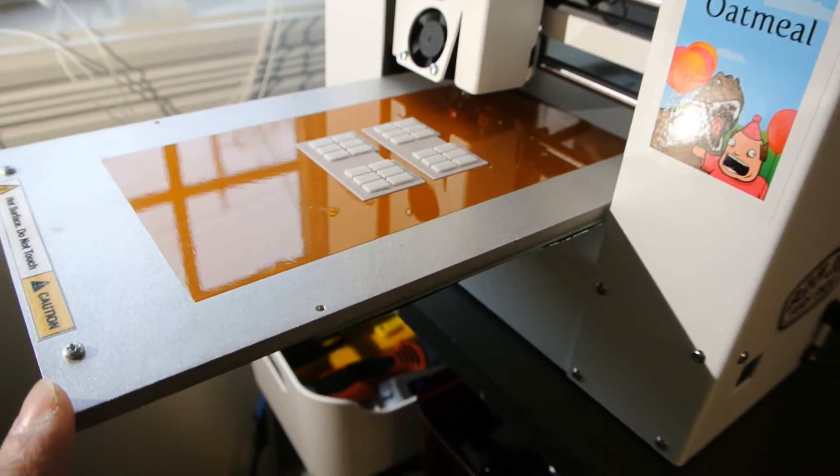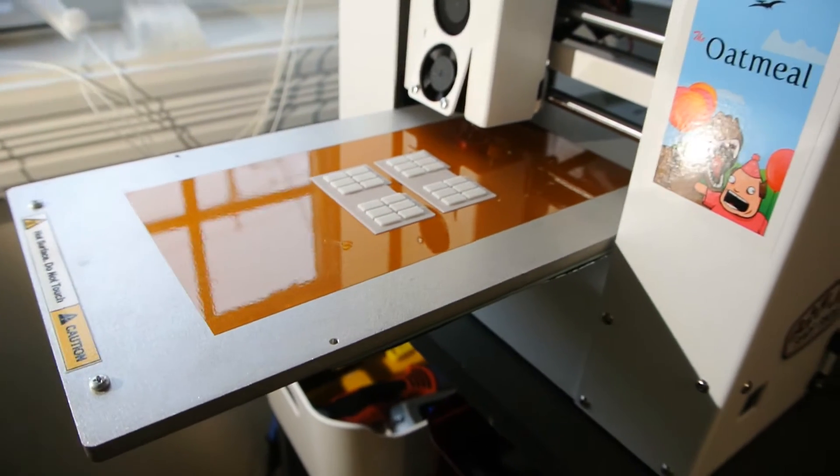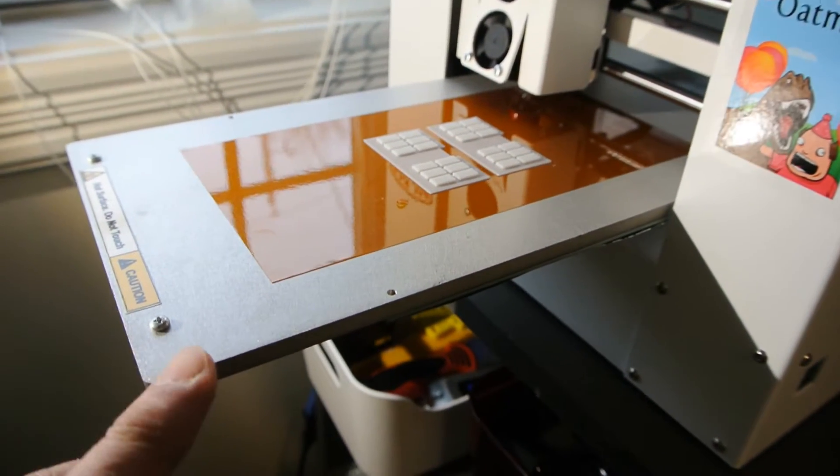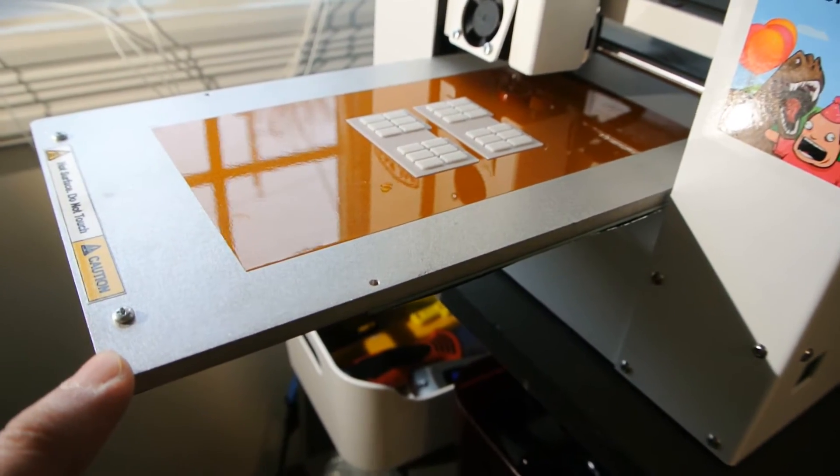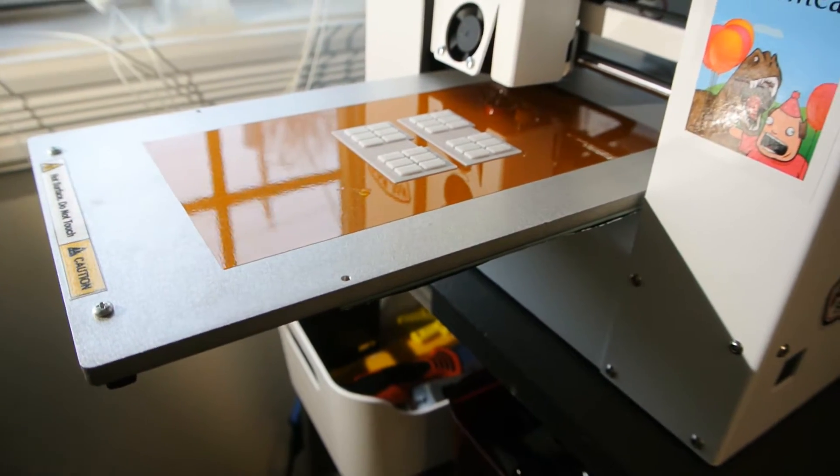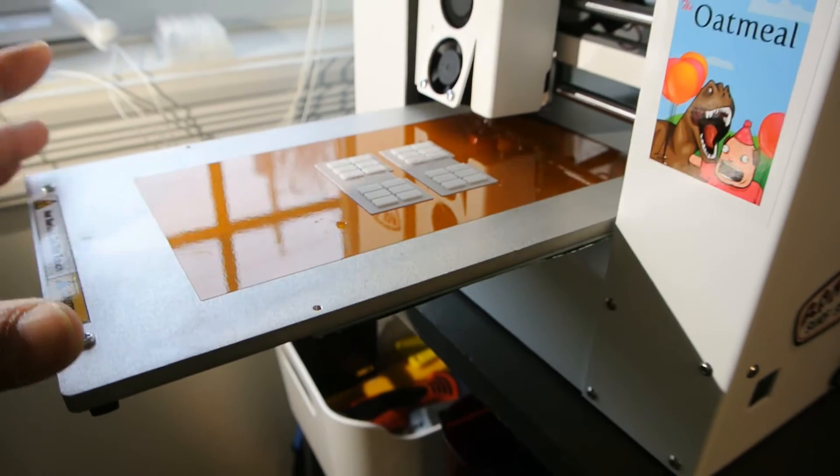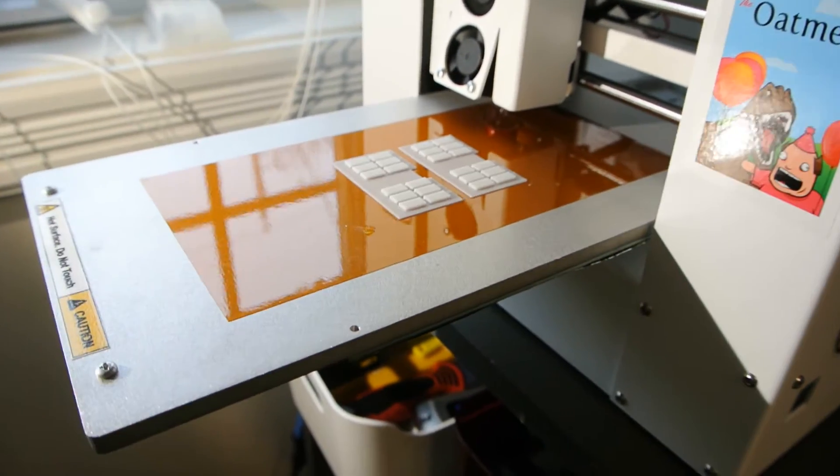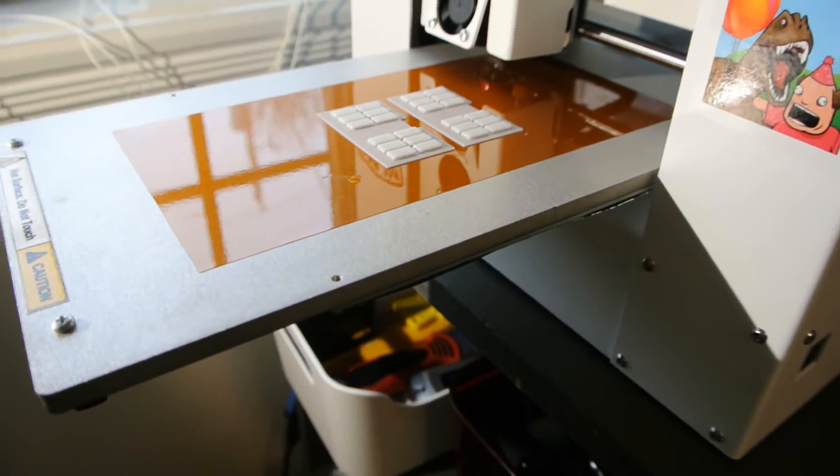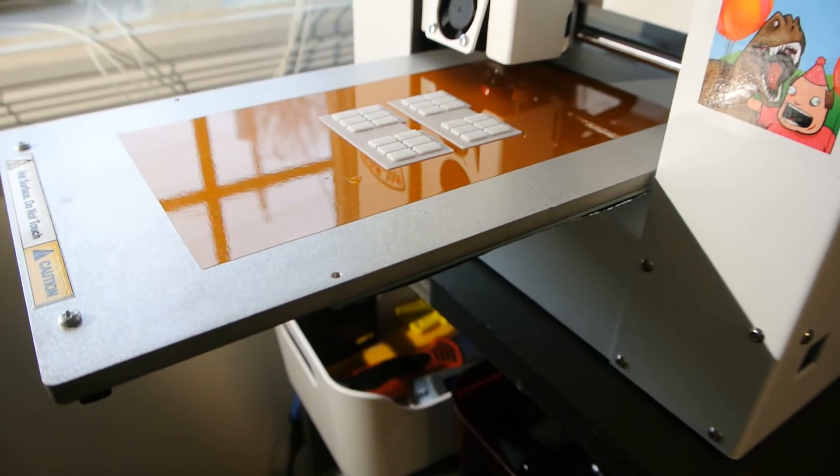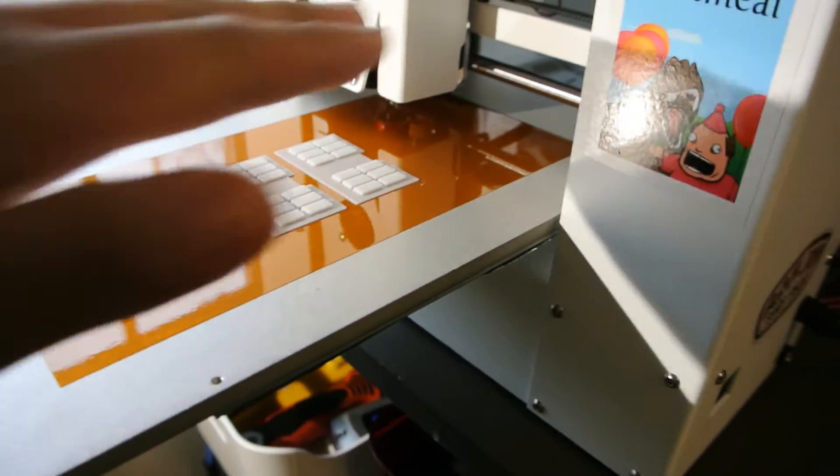You can buy either just the heated print bed or the extended bed, but I got the two of them at the same time. It was just a better deal and convenient since I was going to take it apart. Why not put it together all at once? So this extended print bed gives you an extra four inches of Y-axis.